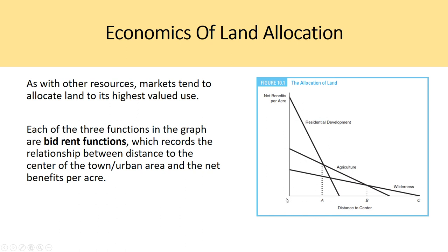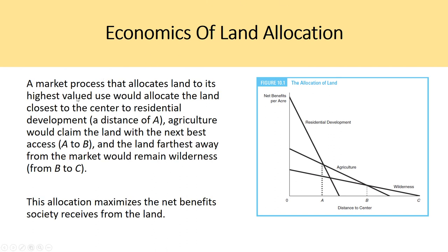On the y-axis you have net benefits per acre, and on the x-axis you have distance to center — zero being the center of the city, and point C being the farthest point in this urban area. Between distance zero and A, the area would be residential development; between A and B, the area would be agriculture; and between B and C, the area would be wilderness. The intersection points show where residential development stops and agriculture starts, and where agriculture stops and wilderness starts. A market process allocating land to its highest valued use maximizes the net benefits society receives from the land.